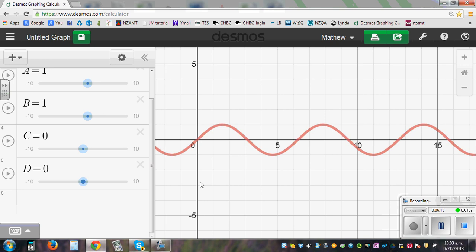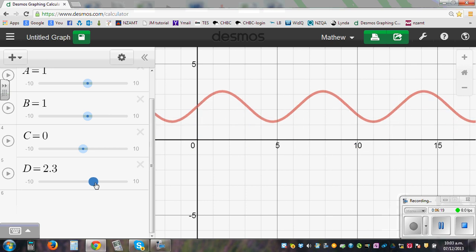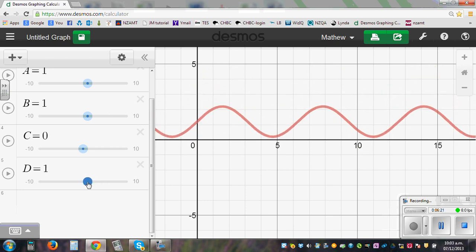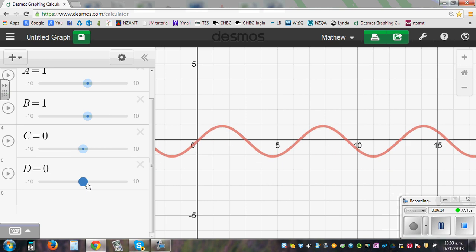Now what happens when you change D. D changes the baseline. In this case, the baseline is 0. And when you move this, the graph will go up and down. The baseline will move. So D changes the baseline.